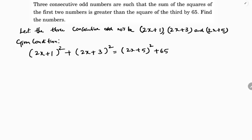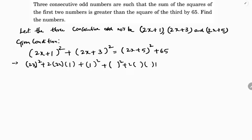Expanding using (a+b)² = a²+2ab+b²: for (2x+1)²: 4x²+4x+1; for (2x+3)²: 4x²+12x+9; and for (2x+5)²: 4x²+20x+25.